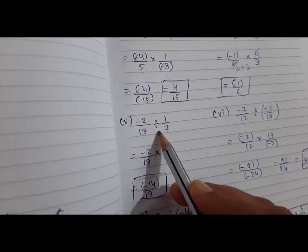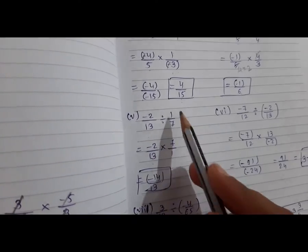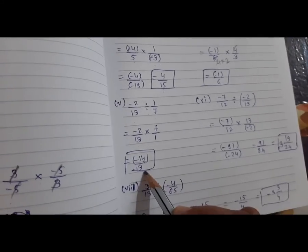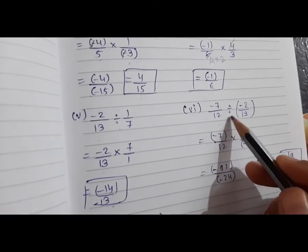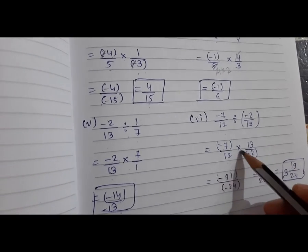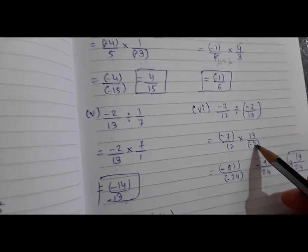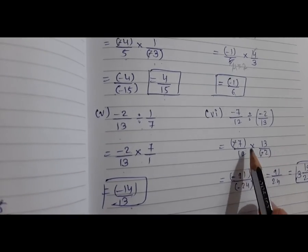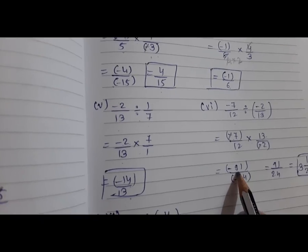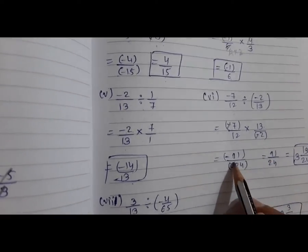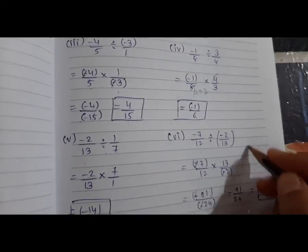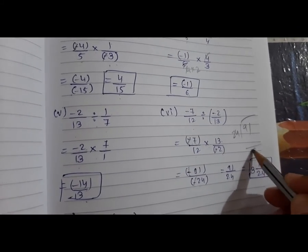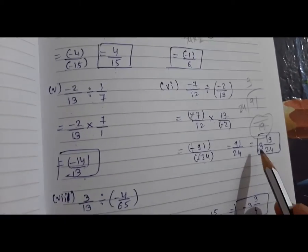After that, minus 2 upon 13 divide by 1 upon 7. Minus 2 upon 13 multiply 7 upon 1 — minus 2 times 7 is minus 14 upon 13. Okay. Then minus 7 upon 12 divide by minus 2 upon 13. So minus 7 upon 12 multiply 13 upon minus 2 — minus minus becomes plus. So 13 times 7 is 91, and 12 times 2 is 24. Dividing 91 by 24: quotient 3, remainder 19 — answer is 3 and 19 upon 24.